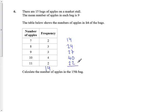And 11 times 2 is 22. So I would add all these up. I would add up 14 plus 24 plus 27 plus 40 plus 22, and I would add up to 127.